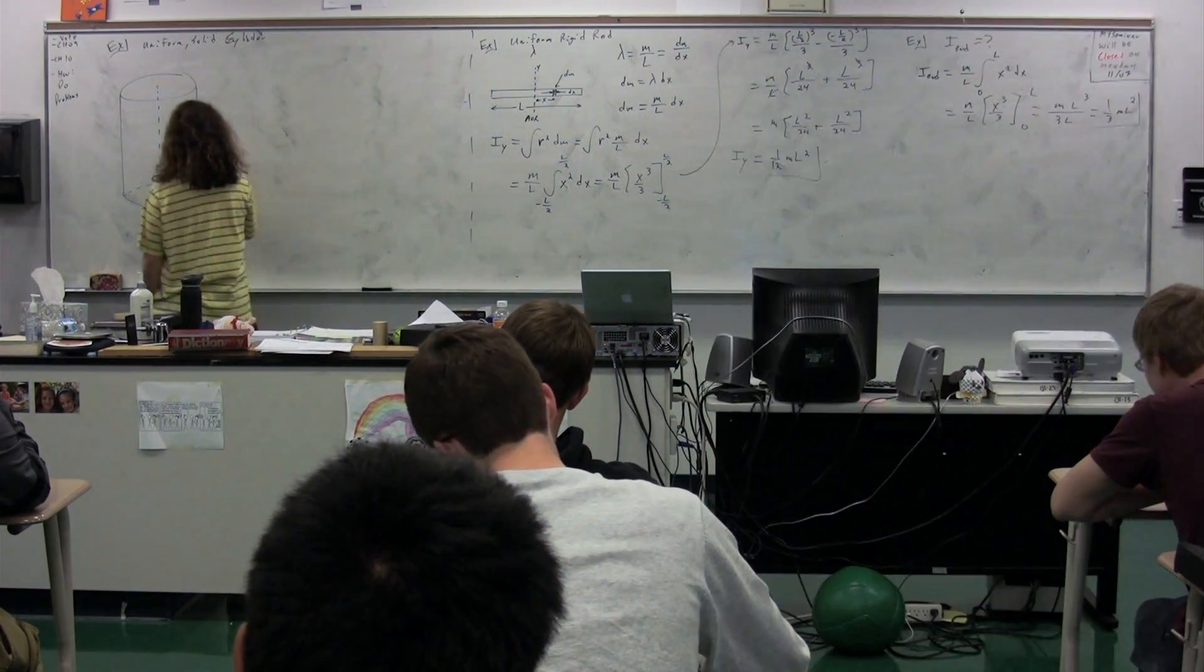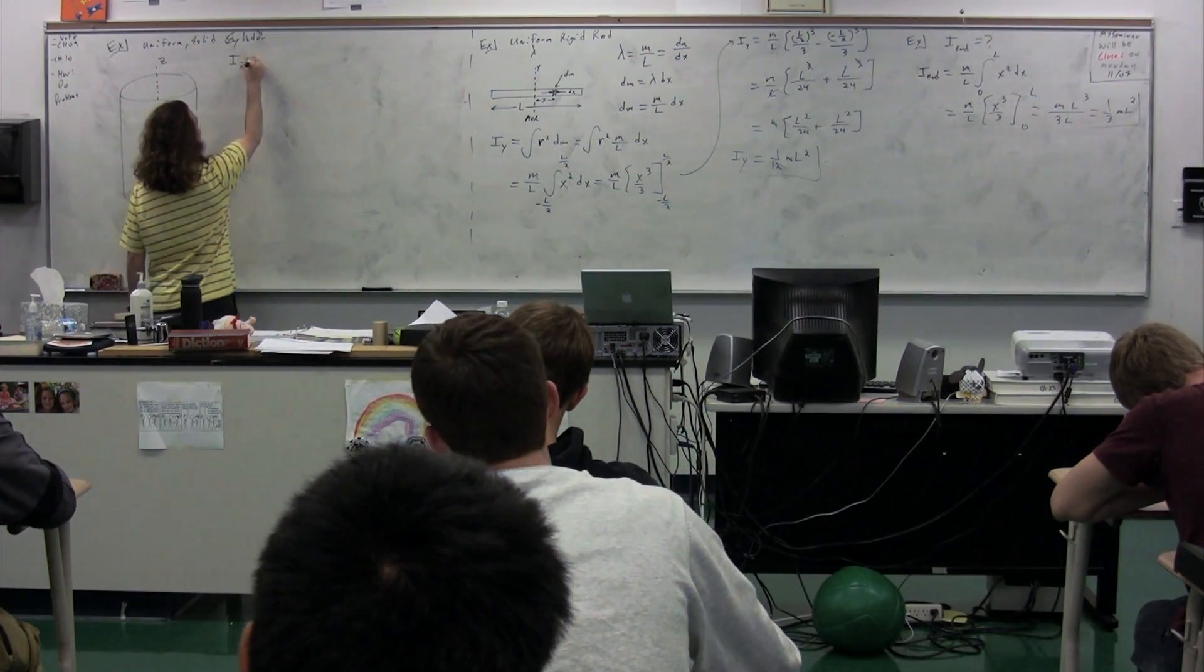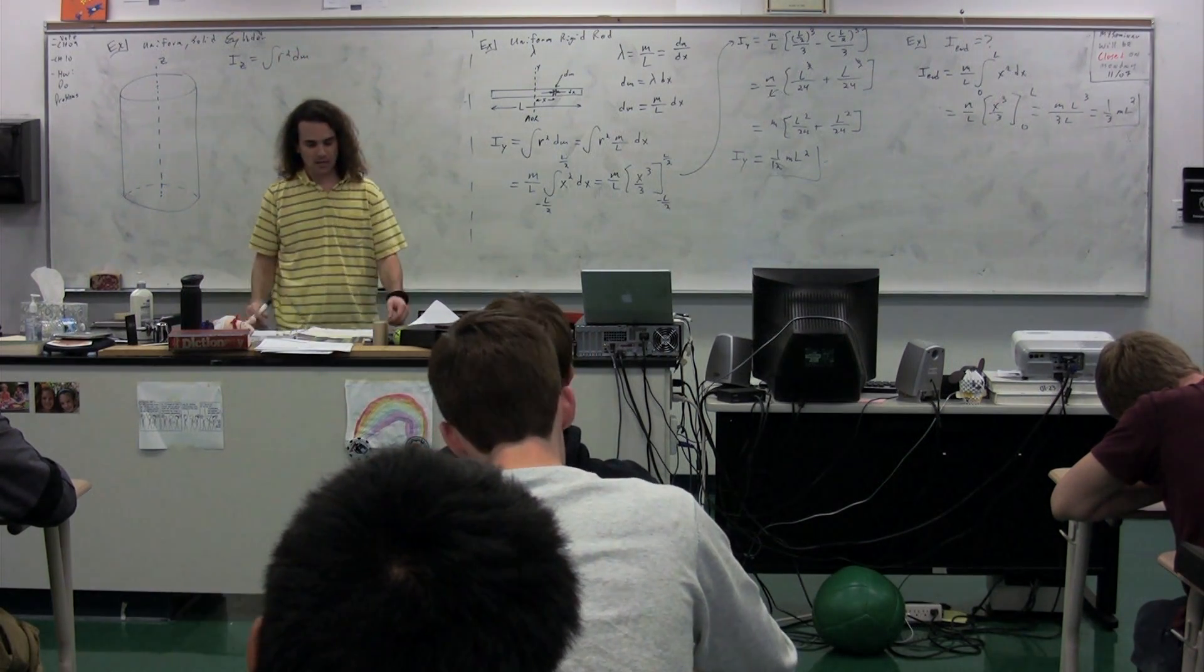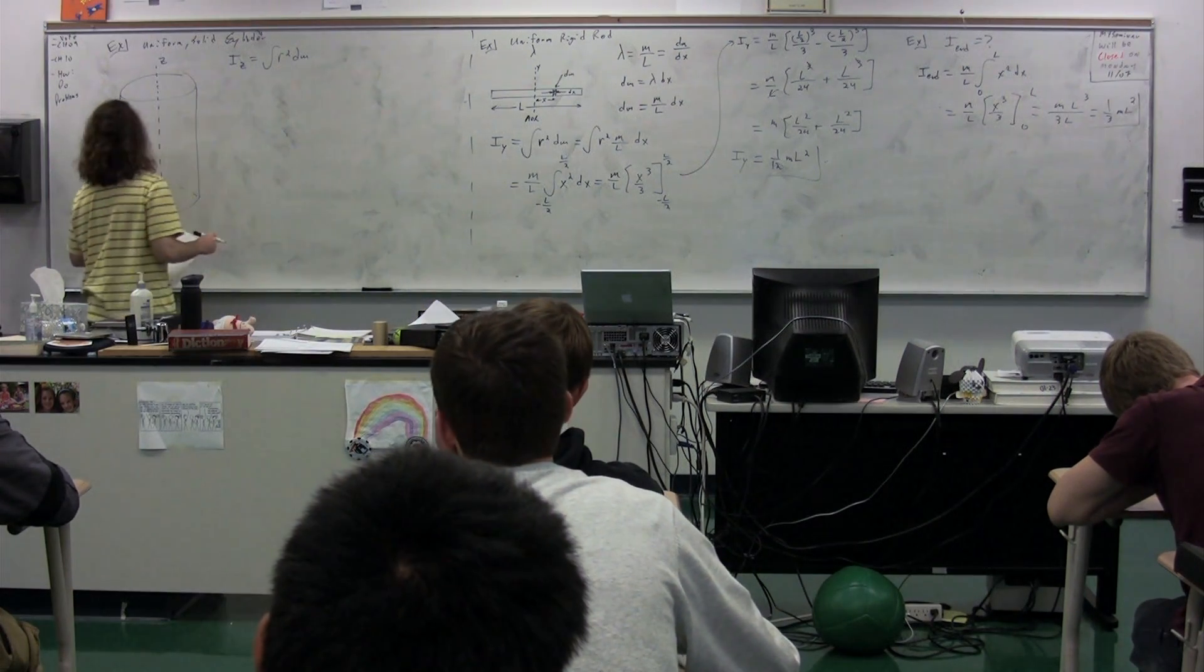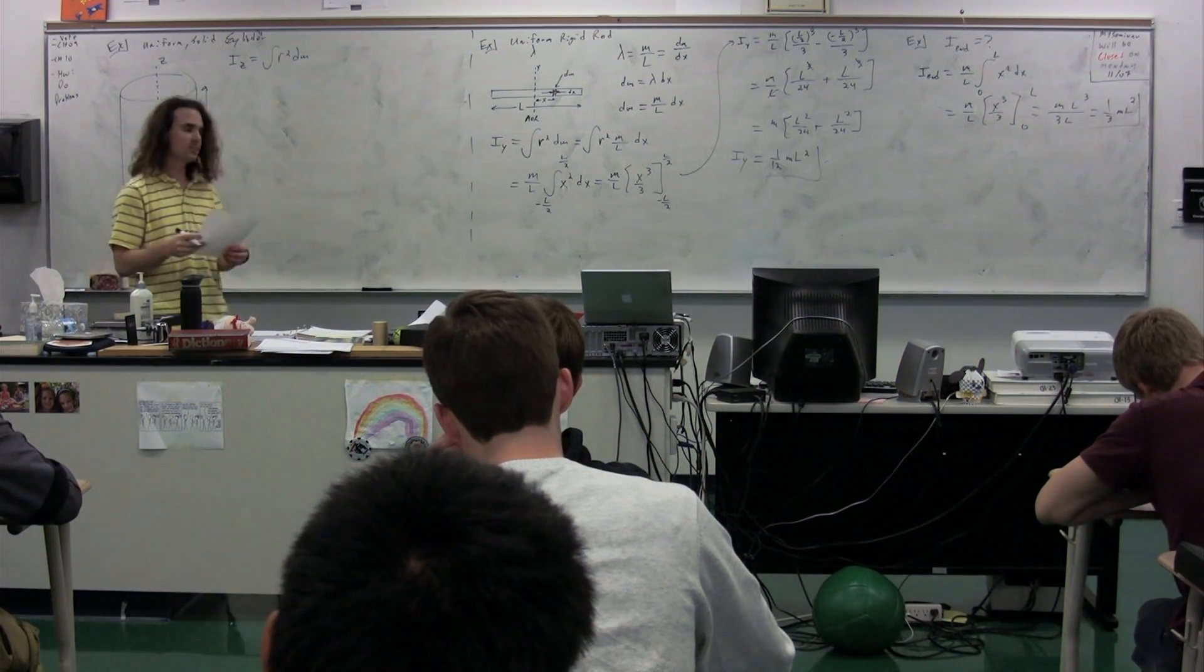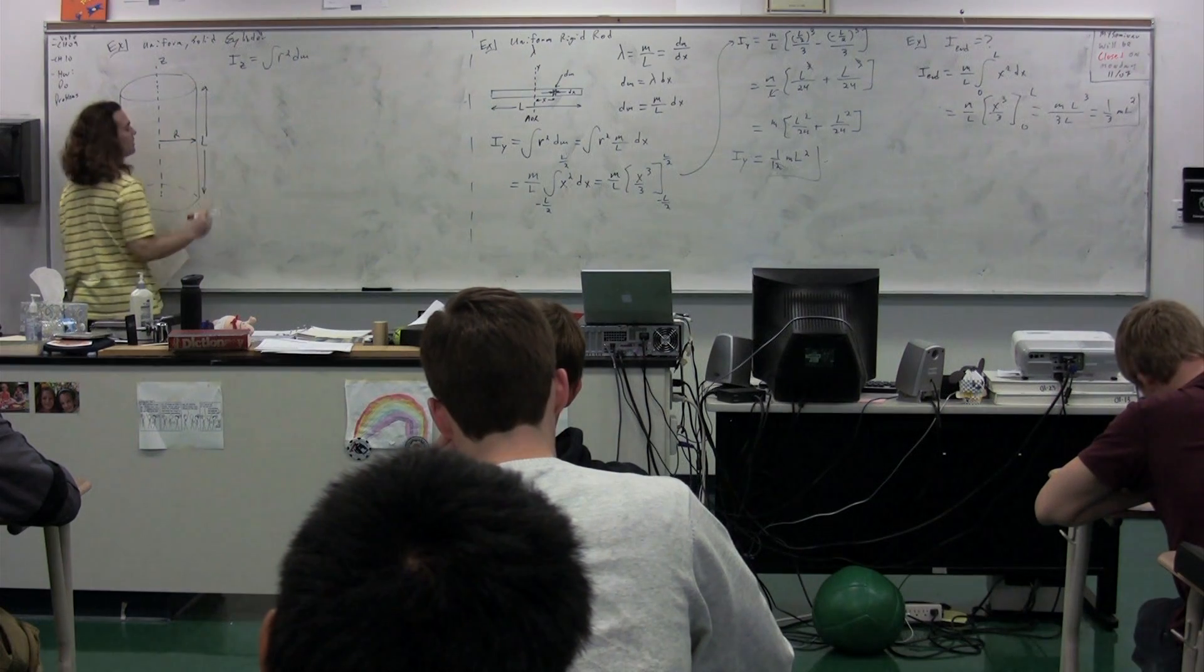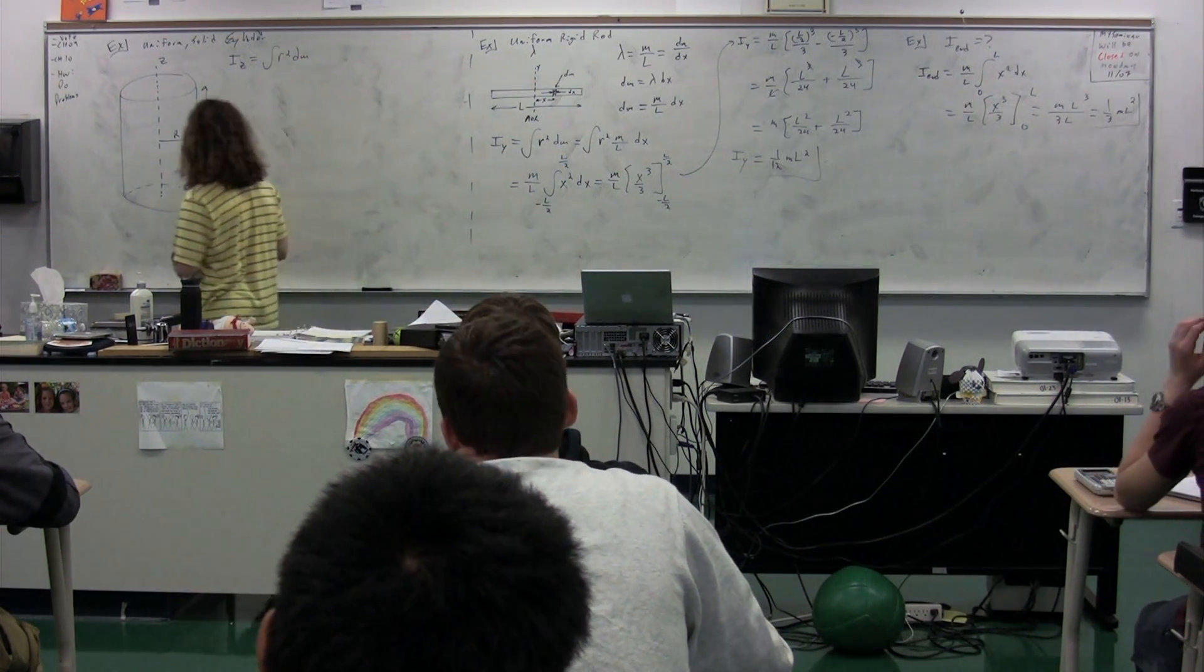Again, we're going to call this the z-axis. The moment of inertia around the z-axis is going to be equal to the integral of r squared dm. Now, we need some dimensions. L is going to be the overall height or length of the cylinder. R, big R, capital R, is going to refer to the radius of the cylinder itself.